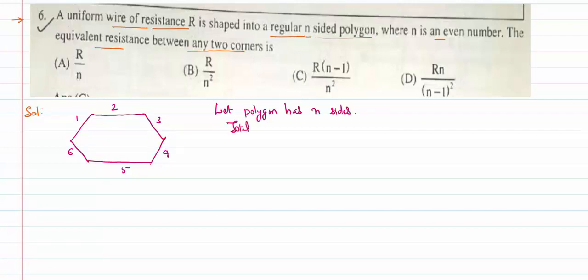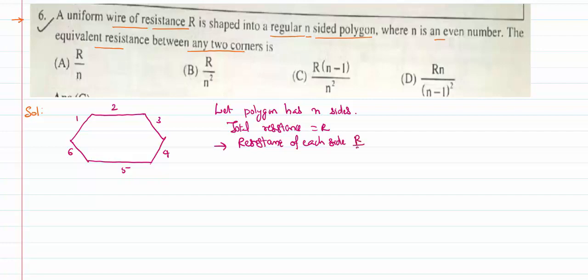The total resistance of the polygon is equal to r. Assuming that resistance is equally distributed across all sides, each side has an identical resistance. The resistance of each side is r/n, because resistance is directly proportional to length. As there are n sides, the total length is divided into n equal parts, so each part has resistance r/n.